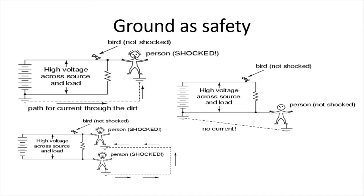So ground is safety — the electricity needs a place to go. If you look at the top left picture, we've got a bird sitting on the power lines and it doesn't have a problem because it's not connected to ground. On the other hand, if you touch that wire and your feet are on the ground, you're a cooked meat sack.